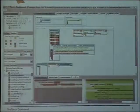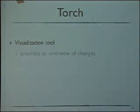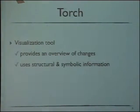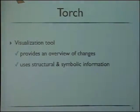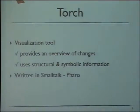If you don't know by heart that red means deletions, you'll have that information in an area of the dashboard. Torch is a visualization tool that provides an overview of changes based on structural and symbolic information — we compare two versions, track all the information, and map it visually. We're not only mapping the changes but the whole structure of the system in those versions. It's built in Smalltalk and integrated with Monticello 1.